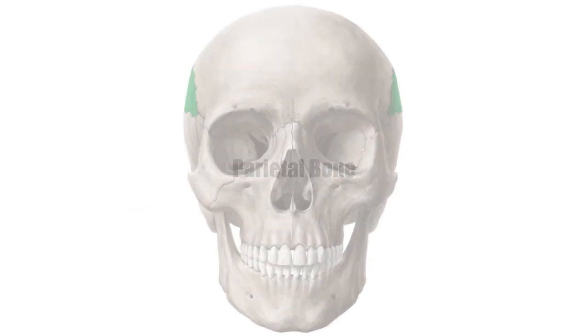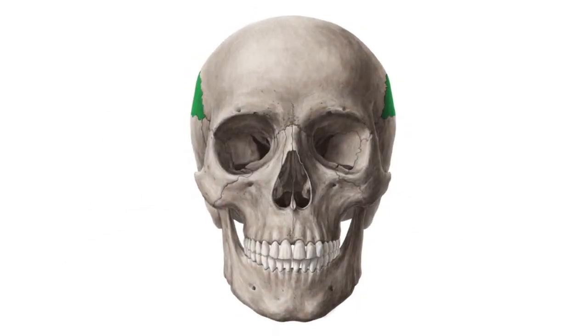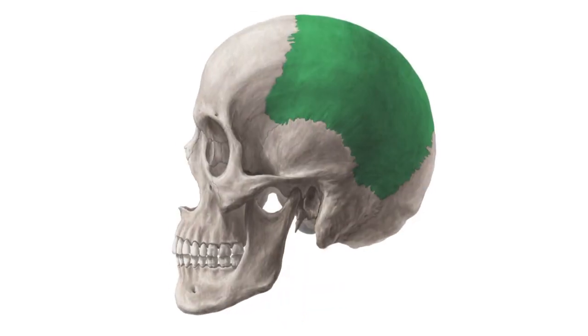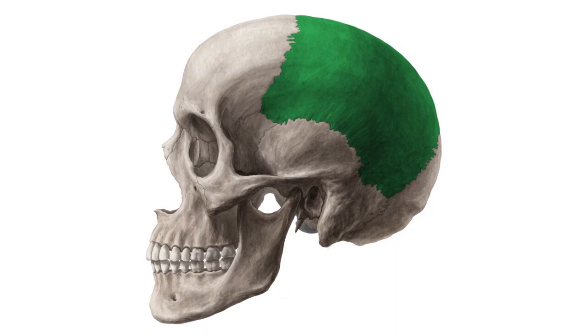Hey everyone, it's Matt from KenHub, and in this tutorial we will discuss the parietal bone. The parietal bones are situated on both sides of the neurocranium. They form large parts of the top and the side of the head.